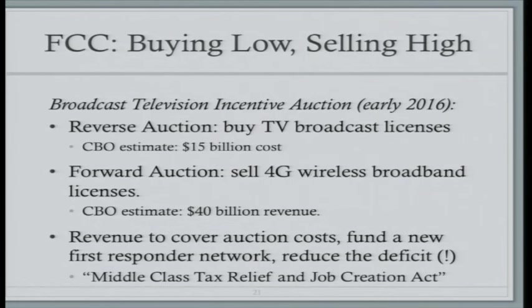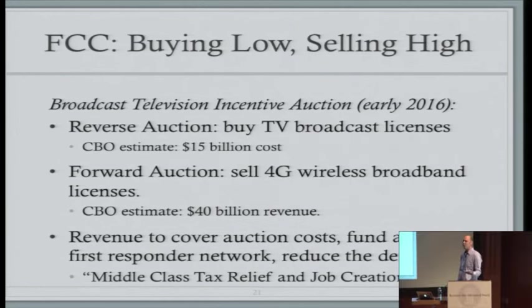The estimated numbers are eye-popping: the Congressional Budget Office estimated spending 15 billion dollars buying licenses back from broadcasters and hoping to make 40 billion selling to telecoms. After covering auction costs and funding a new first responder network, the bill claims 20 billion goes toward budget deficit reduction. The bill's other name is the Middle Class Tax Relief and Job Creation Act — because who's going to vote against a bill with that name?